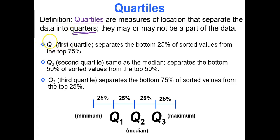The first quartile, also referred to as Q1, separates the bottom 25% of sorted values from the top 75%. The second quartile, or Q2, also known as the median, separates the bottom 50% of sorted values from the top 50% — so your data have to be sorted to find quartiles. The second quartile is right smack dab in the middle.